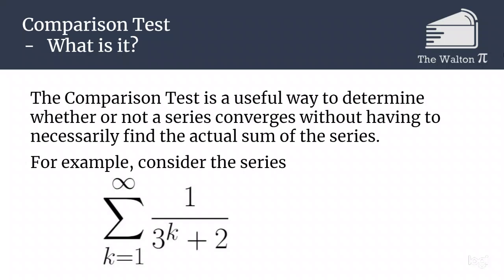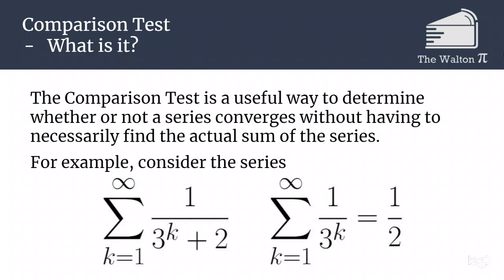For example, if we look at the series of 1 over 3 to the k plus 2, that series looks a lot like the series of just 1 over 3 to the k. We know 1 over 3 to the k converges to 1 half, because that's a geometric series and it works out really nicely. Now, 1 over 3^(k+2) is always less than 1 over 3 to the k when k is bigger than 0. The comparison test allows us to use that less than sign.